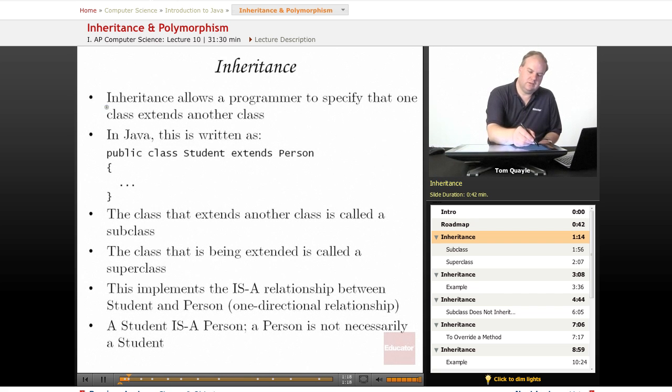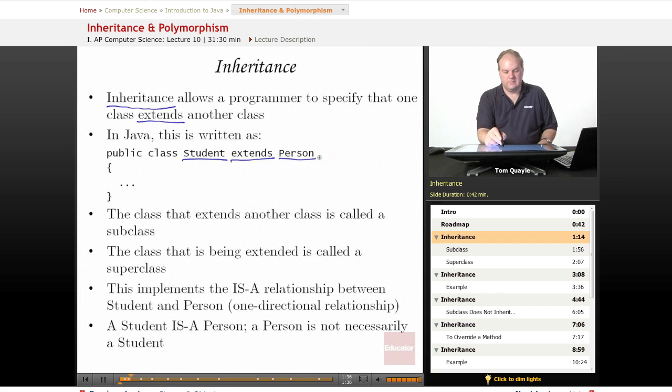Inheritance is the method that allows a programmer to specify that one class extends another class. In Java this is written with the keyword extends. If I have a new class called student and I say that it extends another existing class called person, what that means is that student inherits all the attributes and functionality that's already defined in the class person. Student can then change or add to the functionality that is defined in the class that it's extending, which in this case is person.